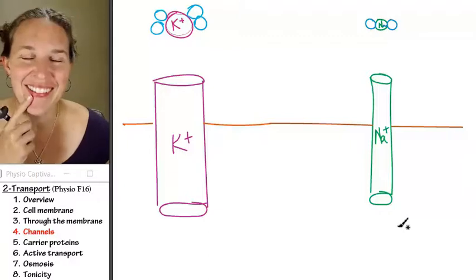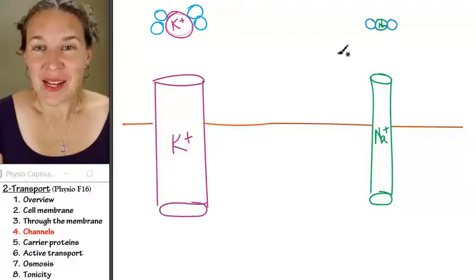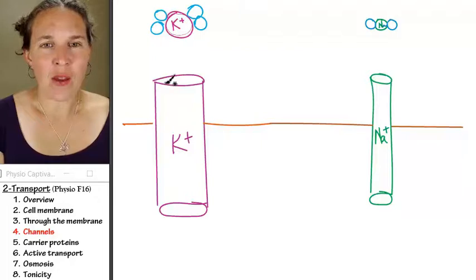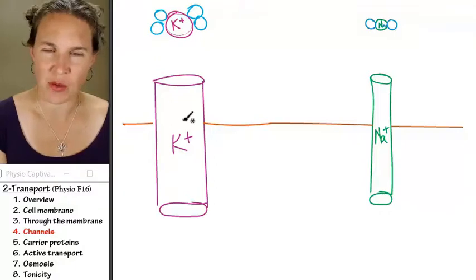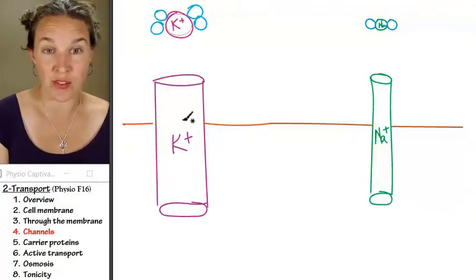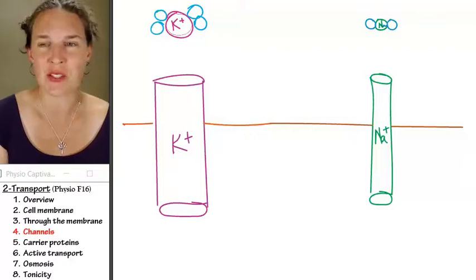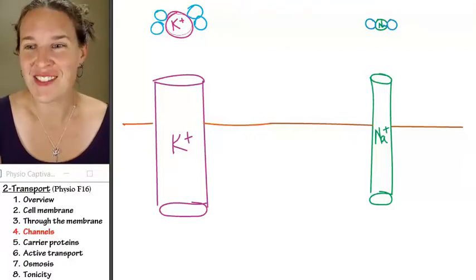You might look at this and be like, okay, sodium is smaller than potassium, so why can't sodium go through the potassium channel? They're both positively charged. Like why, if potassium can go through, why can't sodium? Watch this.